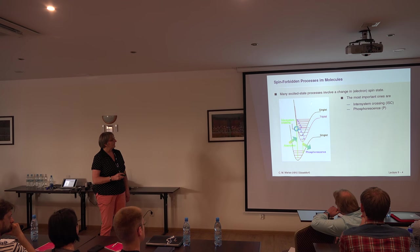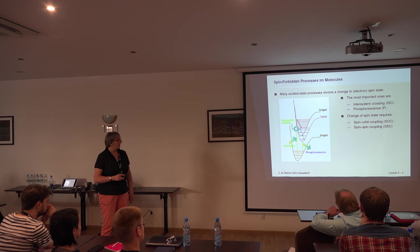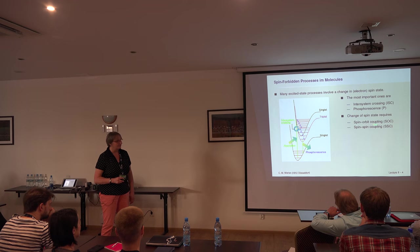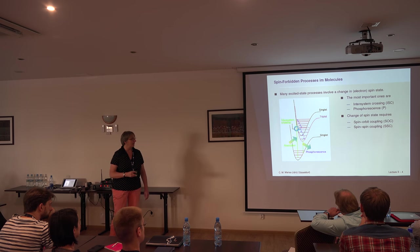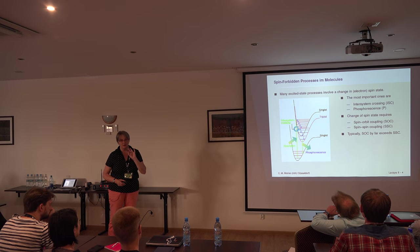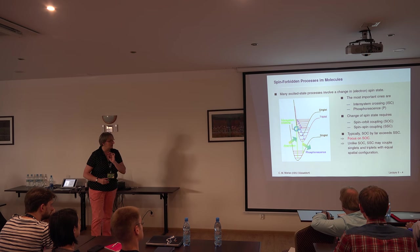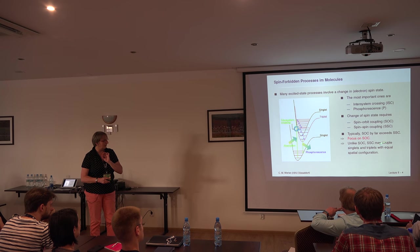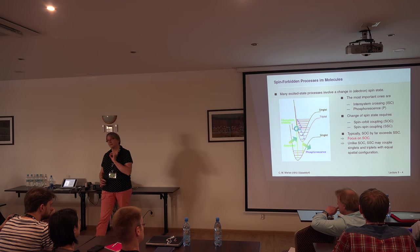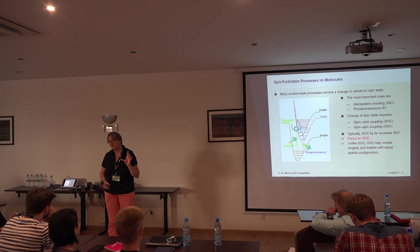The most important excited-state processes involving a change of spin state are inter-system crossing and phosphorescence. You can achieve these by spin-orbit coupling, or also by electron spin-spin coupling. Electron spin-spin coupling is typically much, much smaller than spin-orbit coupling, and therefore we focus here on spin-orbit coupling. However, spin-spin coupling can couple singlets and triplets with equal spatial configuration — and I'll show you in a moment the selection rules for spin-orbit coupling, for which this is not allowed.